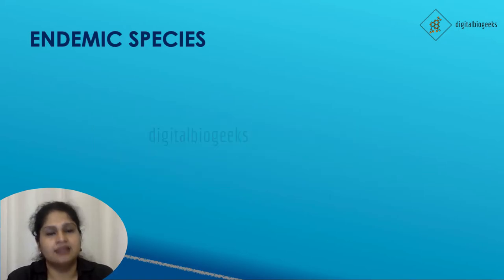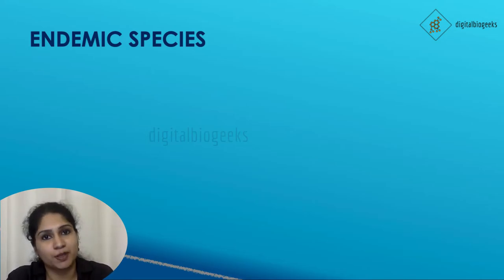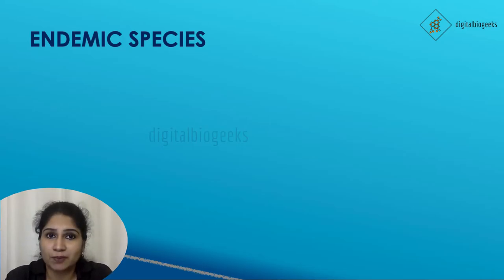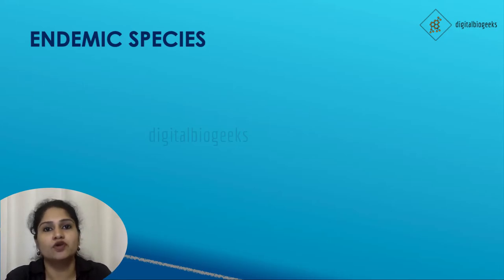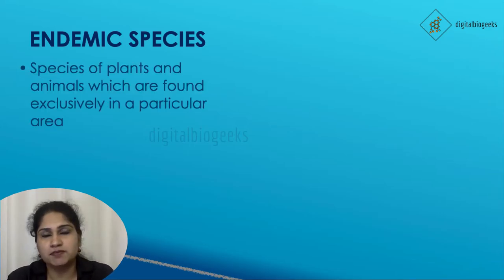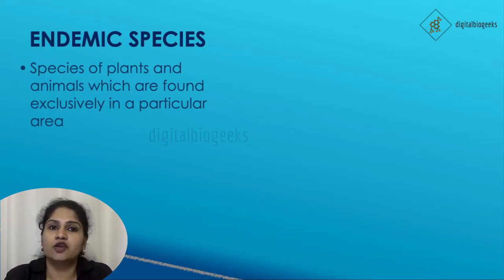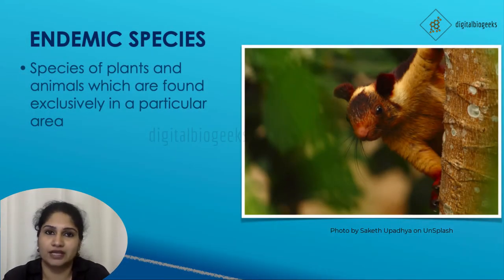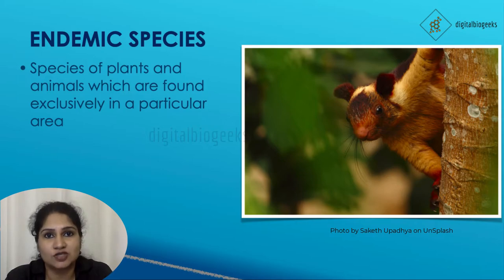Endemic species. A species is a group of organisms in which two individuals can reproduce and make offspring, but only with members of that particular group — not with members from any other group. Examples are humans, wolves, and cats. Endemic species are those plants and animals found exclusively in a particular area and cannot be found anywhere else in the world naturally. The giant squirrel is an example, endemic to the areas of the Western Ghats, Eastern Ghats, and north to Madhya Pradesh. Endemic species are at risk of extinction due to disturbances in their habitat.